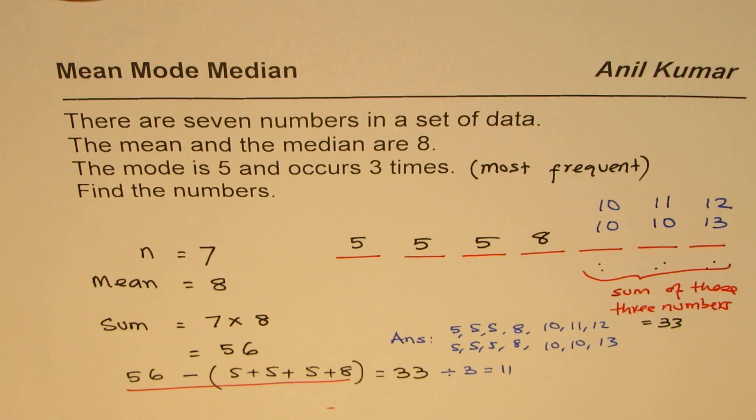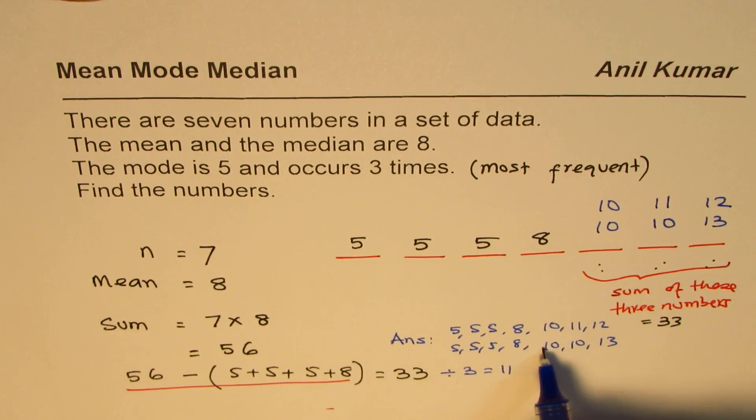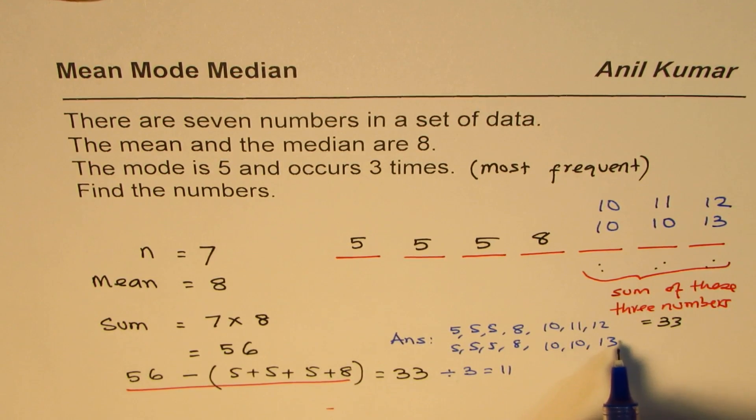Likewise, you can find other possible combinations. For example, you could use nine as one of the numbers and figure out the other two. See if you can find additional valid combinations.